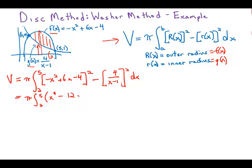x to the fourth minus 12x cubed plus 44x squared minus 4x plus 16. The other one is a little bit easier. The other one is just 16 over x minus 1 squared dx.